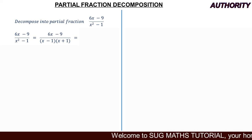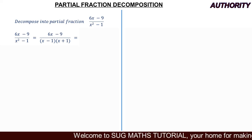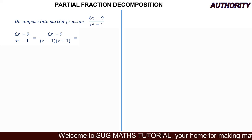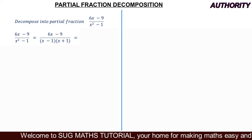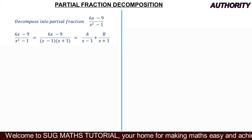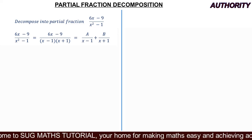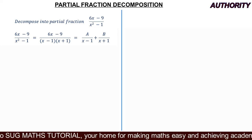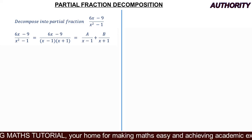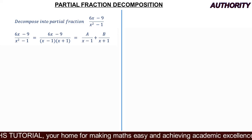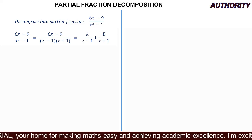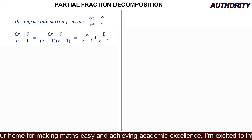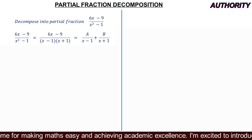So we write: (6x - 9) / [(x - 1)(x + 1)] = A / (x - 1) + B / (x + 1). We assign A to the first factor and B to the second factor.